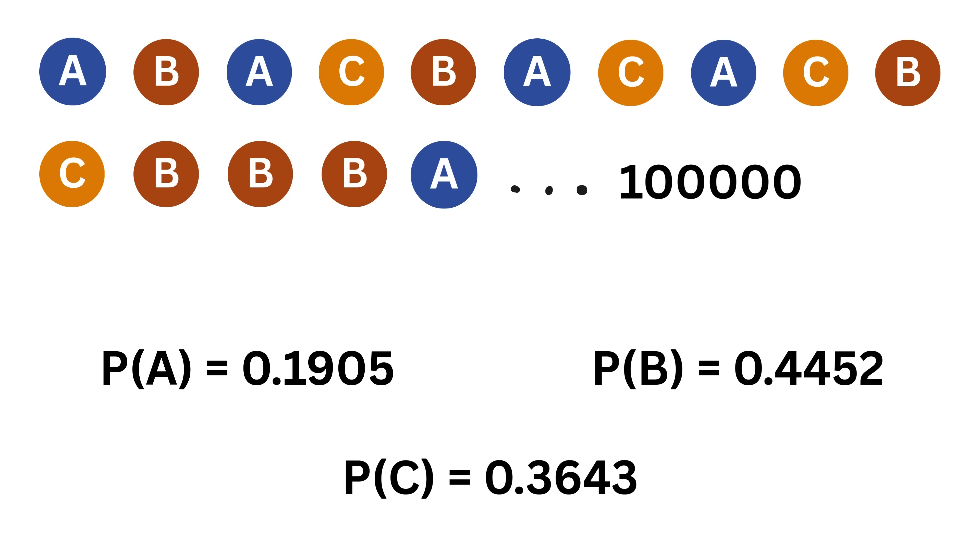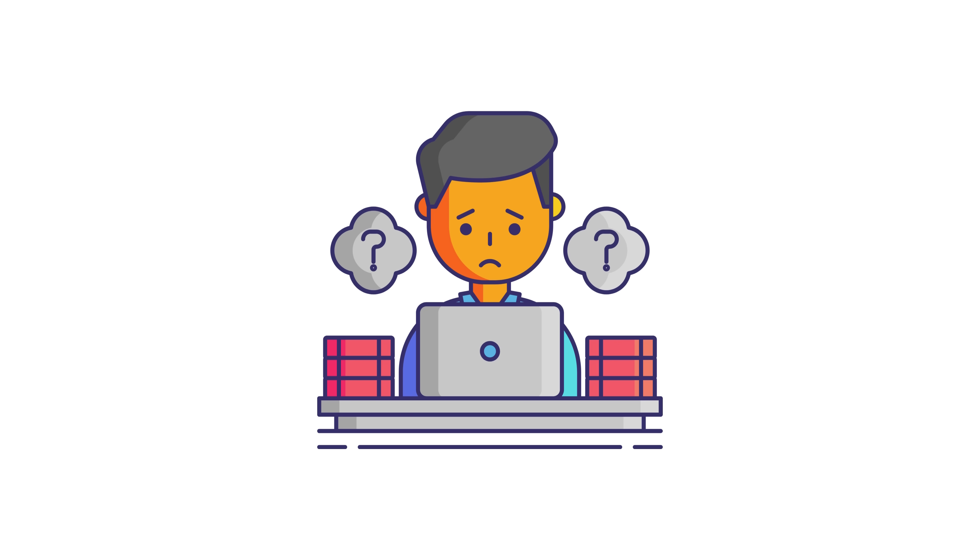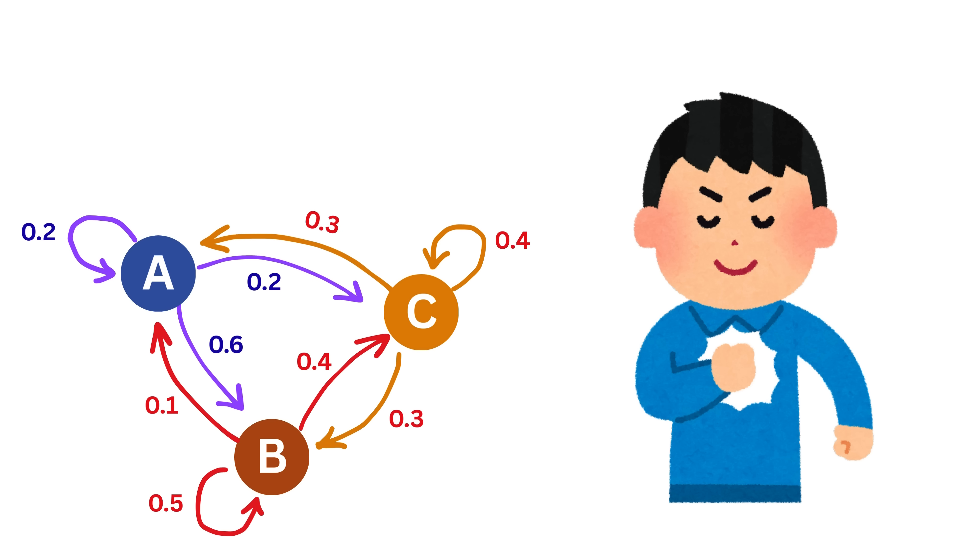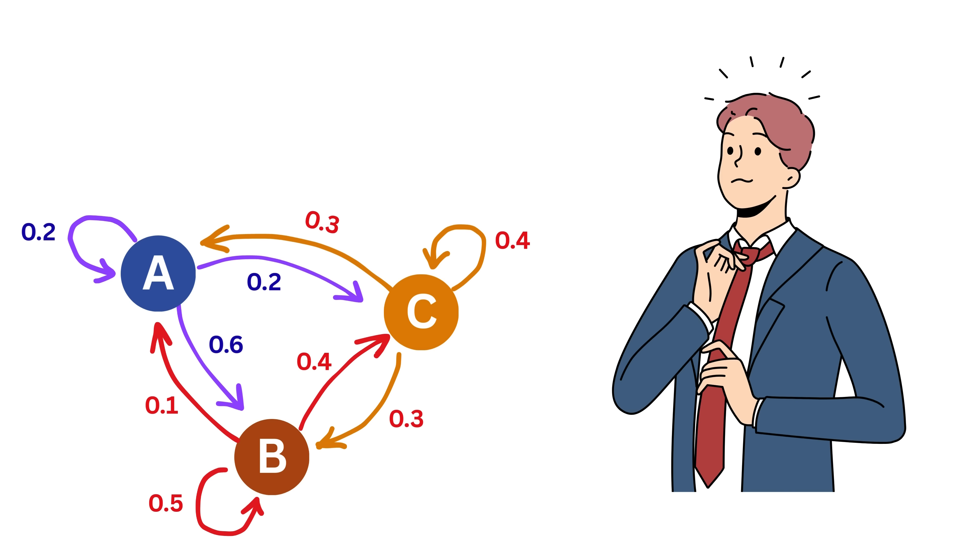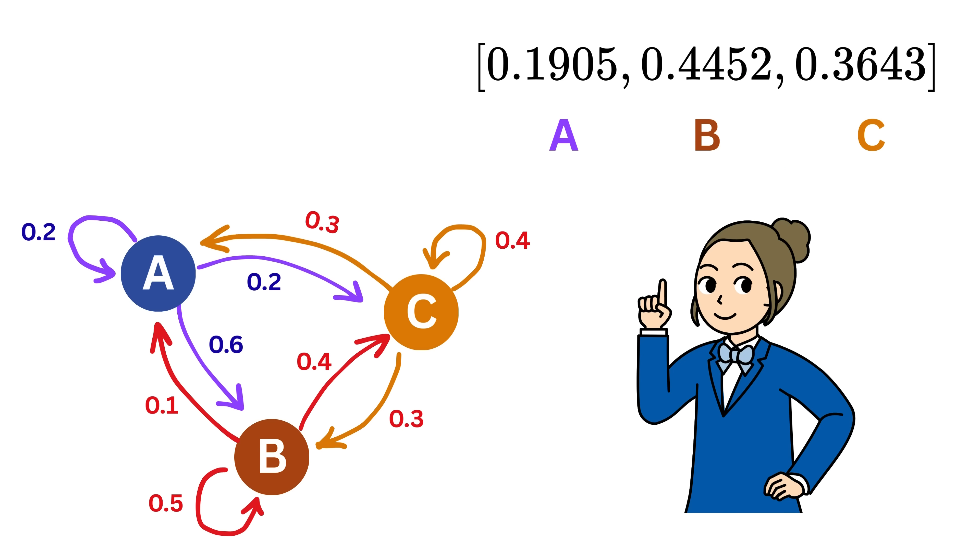Now, we've managed to get the stationary distribution by running a simulation. But let's be honest, that's not the most efficient way to do it, especially if we want accuracy or need to work with larger systems. Plus, how can we be sure that the result we got is the only possible stationary state?